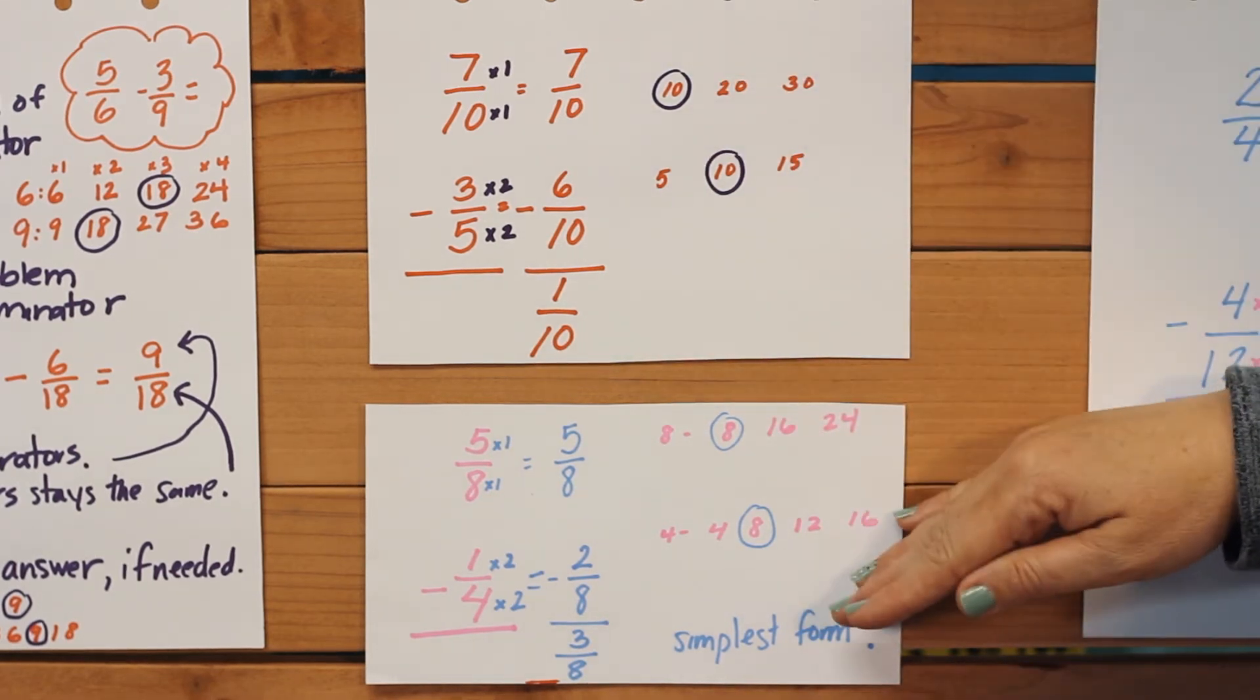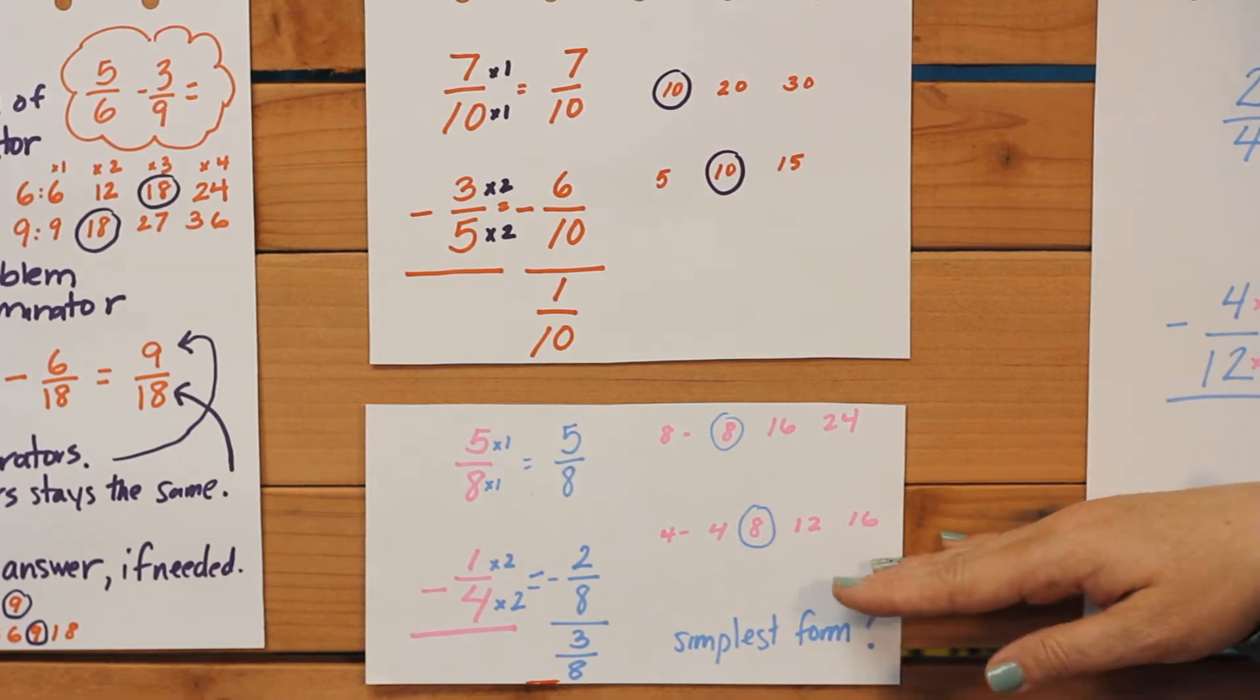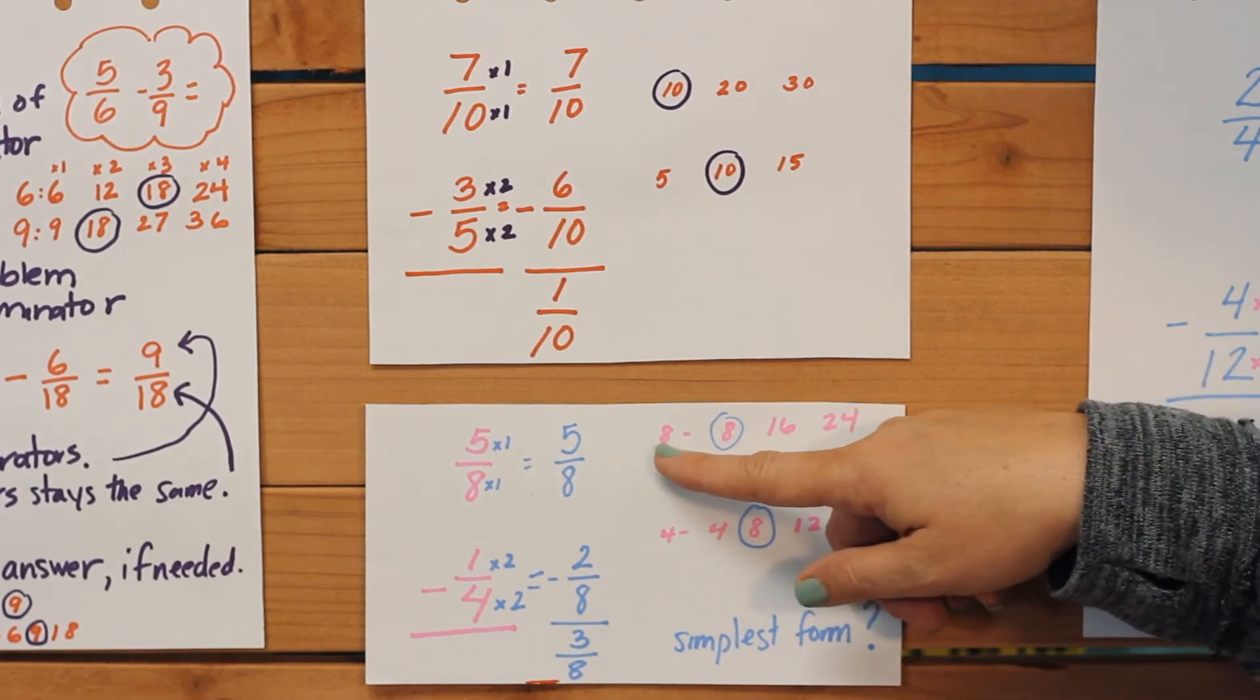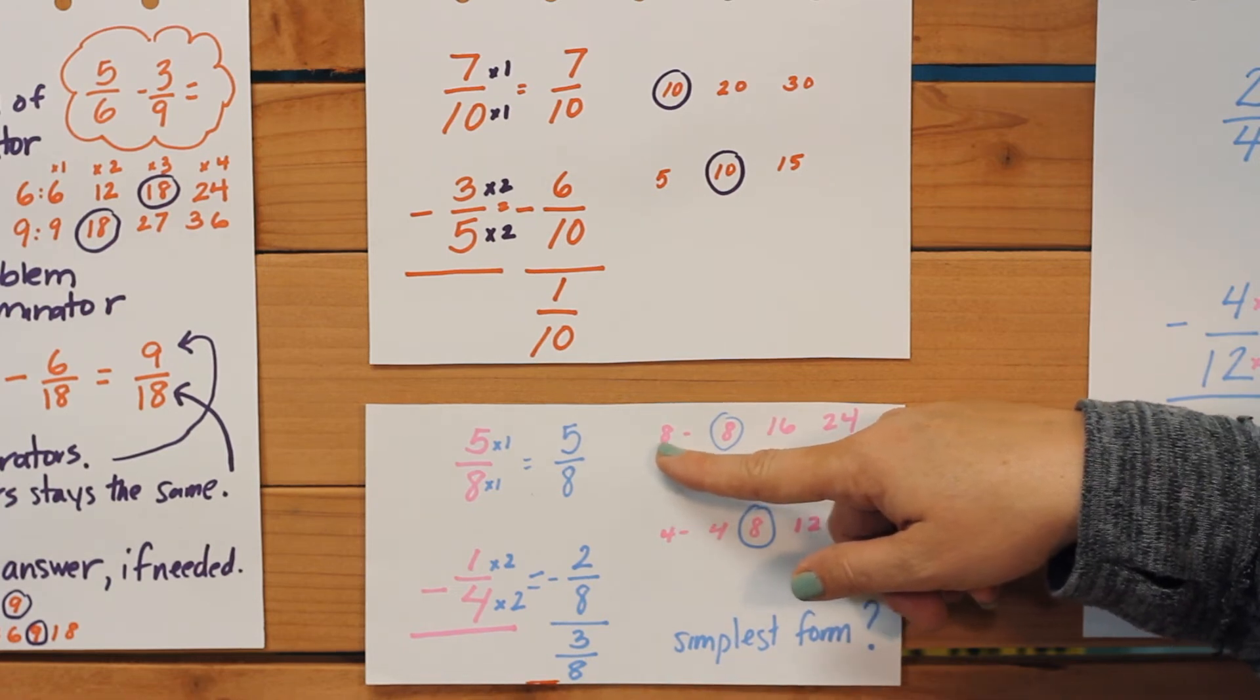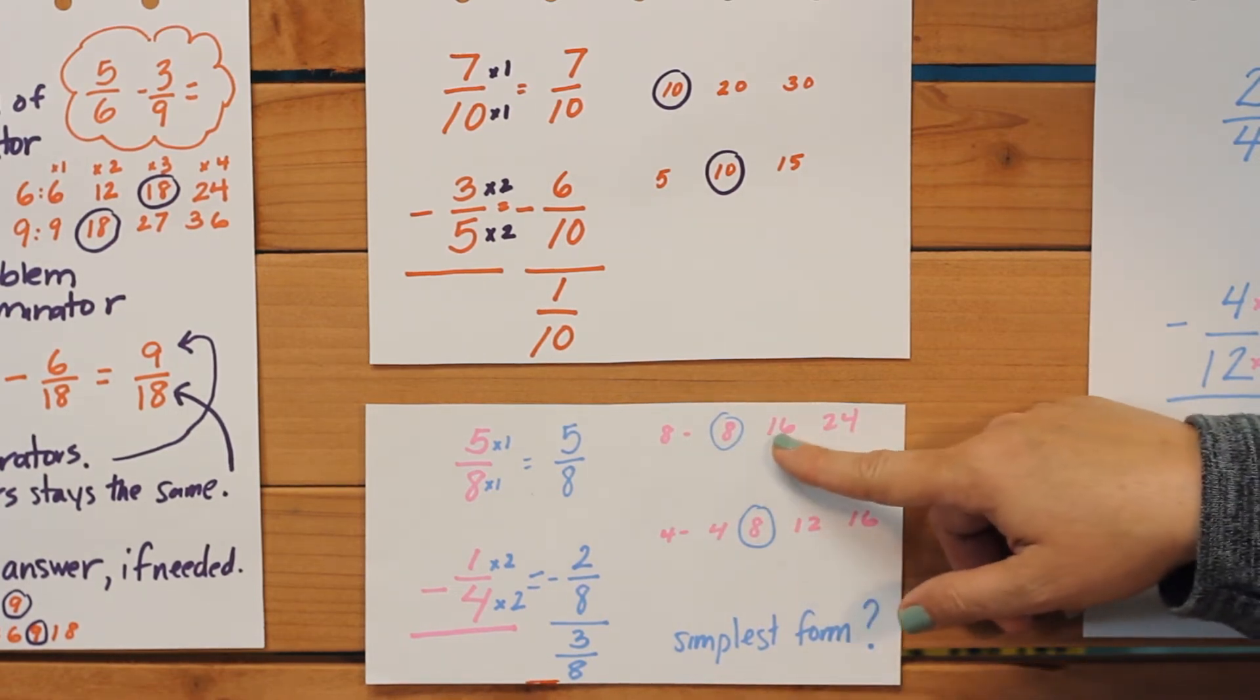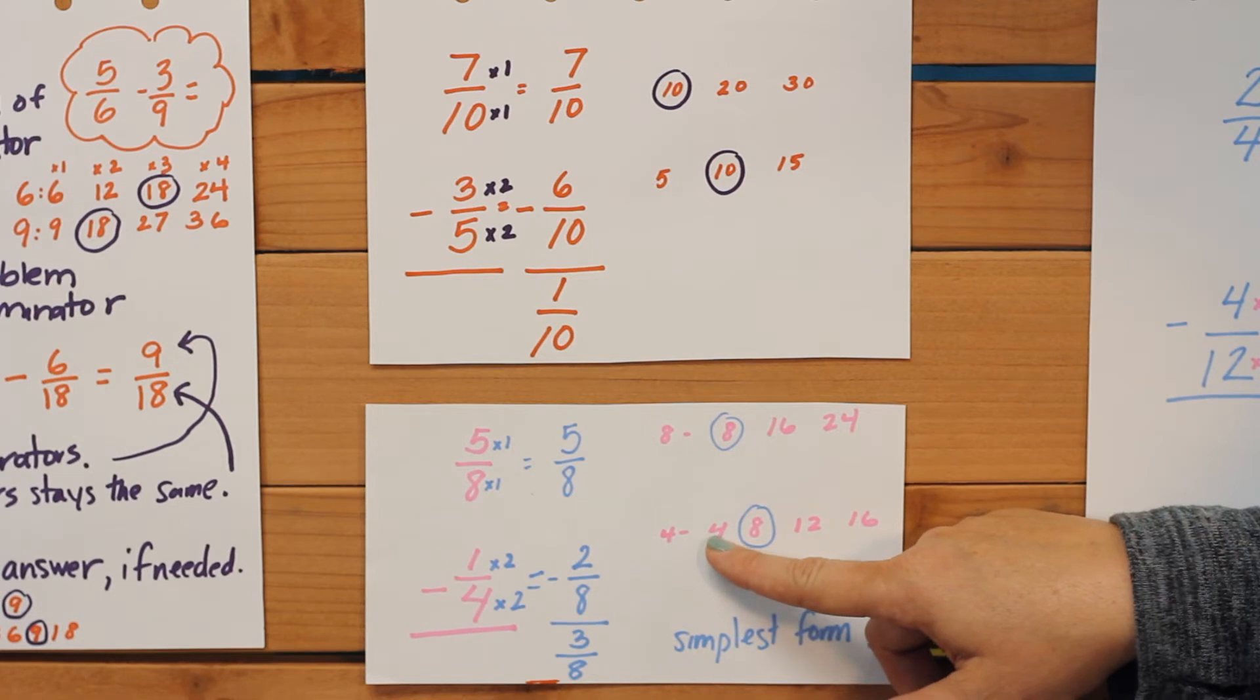Our next example is 5/8 minus 1/4. Well again, we looked for our common multiple. Eight, sixteen, twenty-four. Four, eight, twelve, and sixteen.